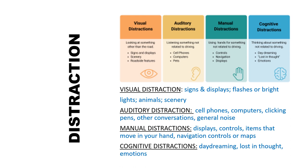There are four types of distractions. Visual distractions include signs and displays, flashes or bright lights, animals, and scenery. Auditory distractions include cell phones, computers, clicking pens, other conversations, and general noise. Manual distractions include displays, controls, and items that move in your hand, as well as navigation controls or maps. Cognitive distractions include daydreaming, being lost in thought, and your emotions.